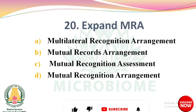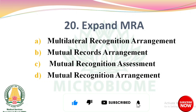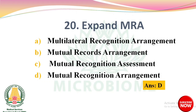Next question: Expand MRA — options: multilateral recognition arrangement, mutual records arrangement, mutual recognition assessment, mutual recognition arrangement. The right answer is option D: mutual recognition arrangement.